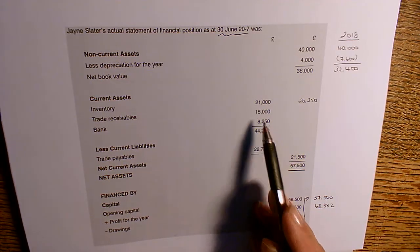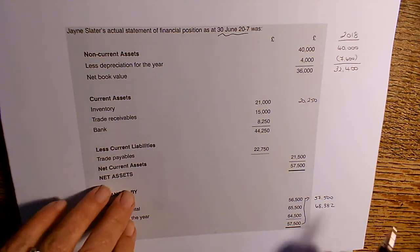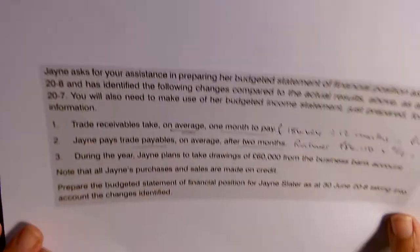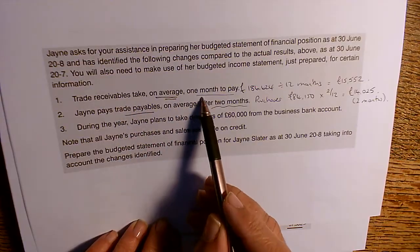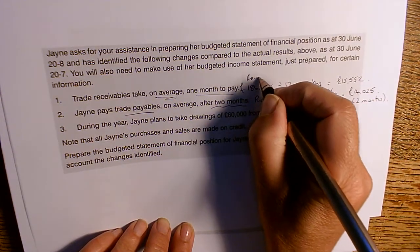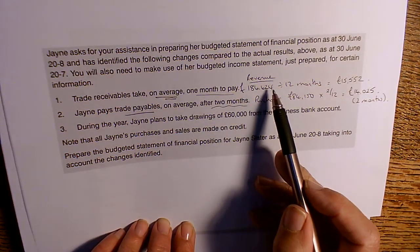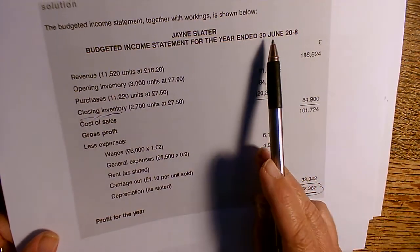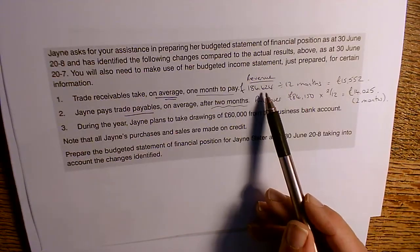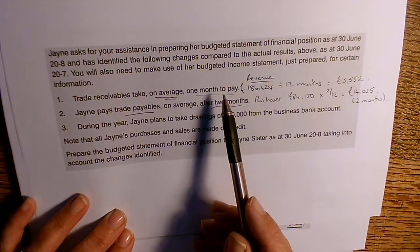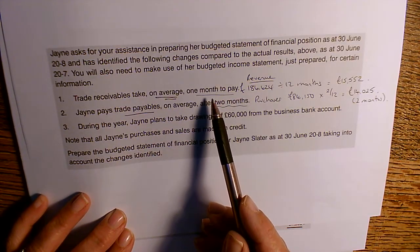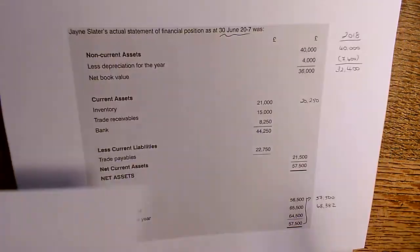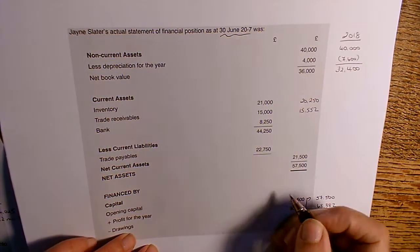Trade receivables last year were £15,000. Looking at the additional information, trade payables take on average one month to pay. Her revenue for the year to 30th June 2018 is £186,624, taken from the income statement. She expects customers to take one month to pay, so at the end of the year she'll have one month's worth of trade receivables. Dividing by 12, trade receivables will be £15,552.